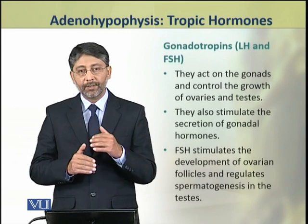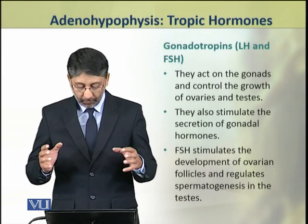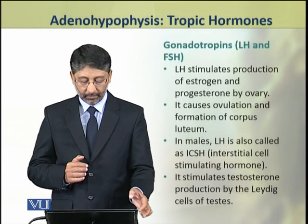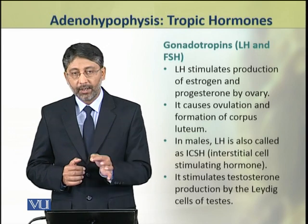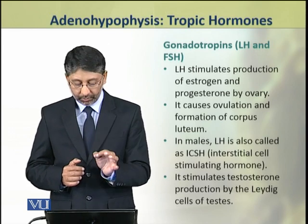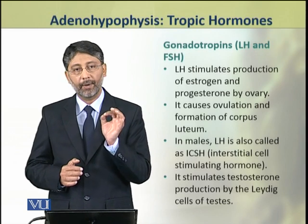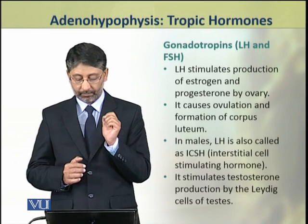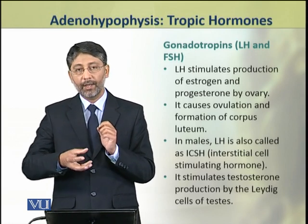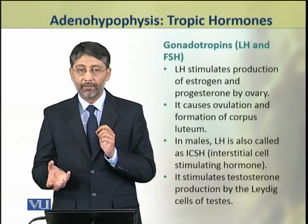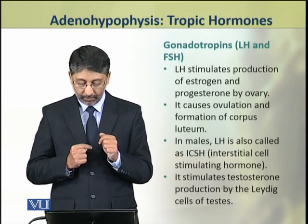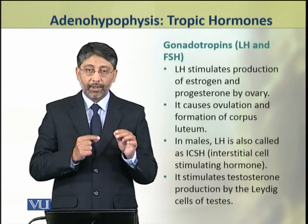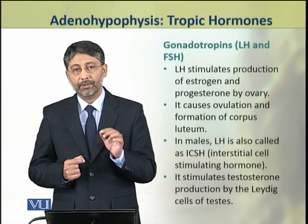FSH stimulates the development of ovaries and regulates spermatogenesis in males. Luteinizing hormone stimulates the production of estrogen and progesterone by the ovary. Luteinizing hormone also causes ovulation, and acts in the formation of the corpus luteum.